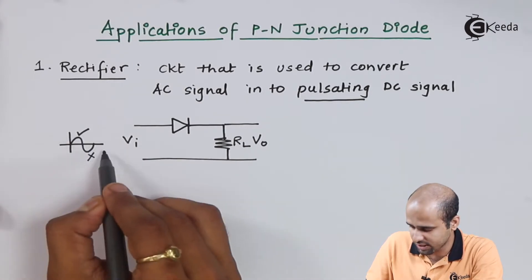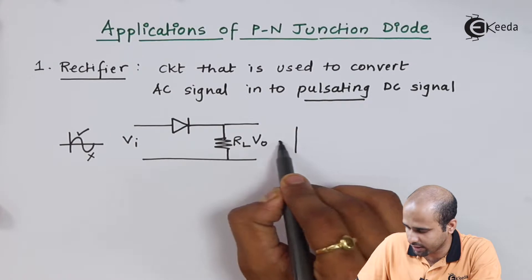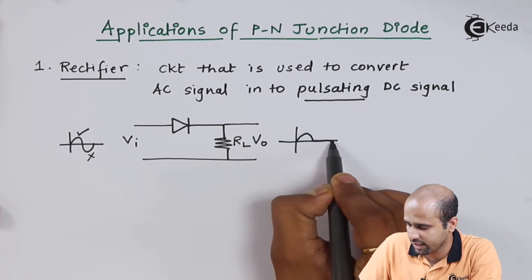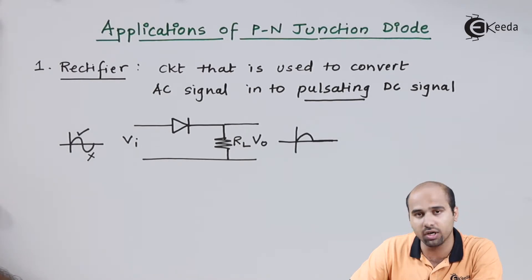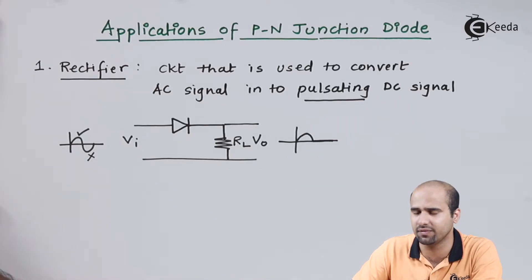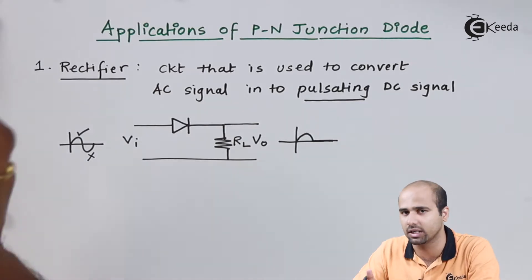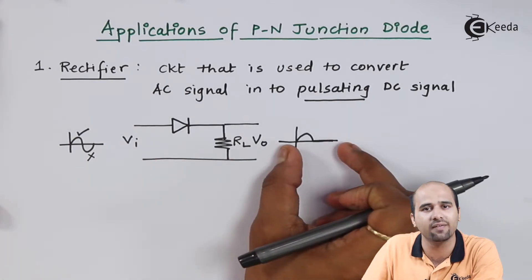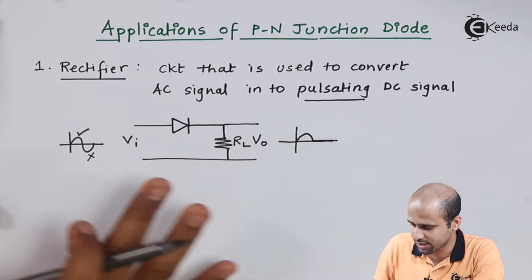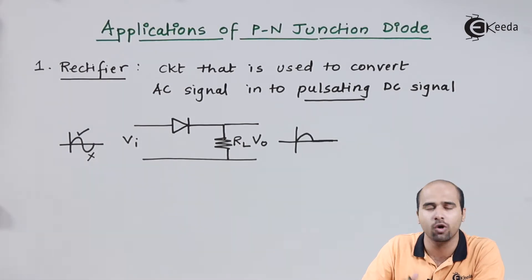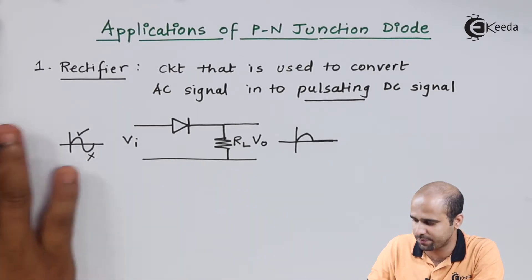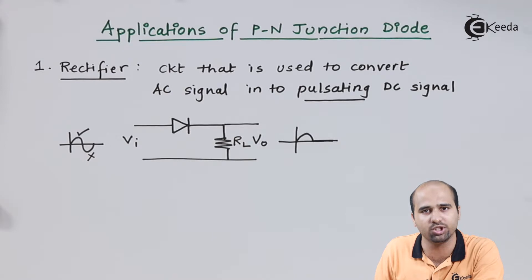So this is how, if this is the AC signal, I am getting only one half of the AC signal and for the other half I am getting zero. The full wave is getting converted into a half wave — meaning both the positive and negative half cycles are converted into only the positive half cycle. This is all about the half wave rectifier. Further, we'll study half wave rectifier, full wave rectifier, and bridge rectifier in separate videos. This is the first application of the PN junction diode.